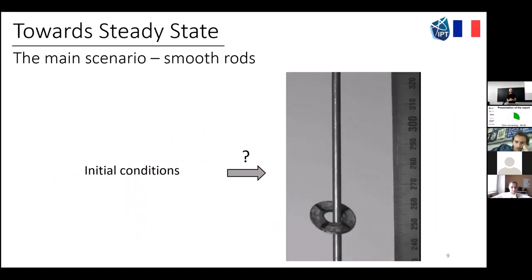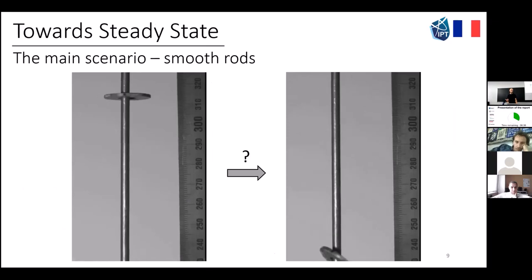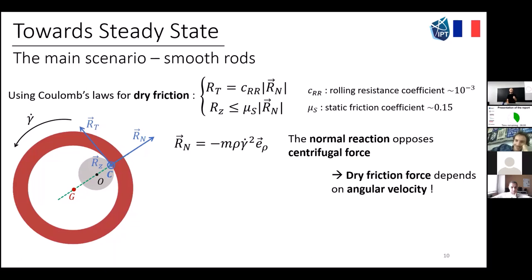Now let's investigate the sliding-spinning transition — in other words, how we go from initial conditions to the steady state. There are many ways to spin washers, but the main scenario is spinning at constant altitude. We use Coulomb laws of dry friction, which relates the normal force at the contact point to the friction force along the horizontal and vertical axes. In this case, because the normal reaction opposes centrifugal force and not just weight, it actually depends on angular velocity — which is not common in dry friction problems. Here it depends on angular velocity through centrifugal force.